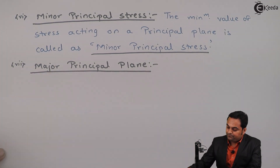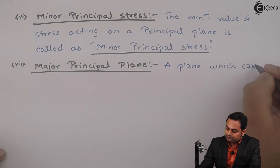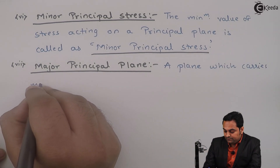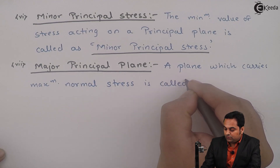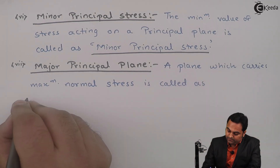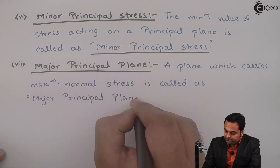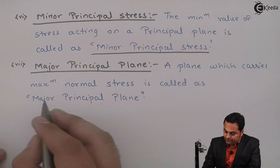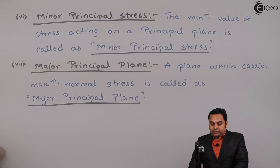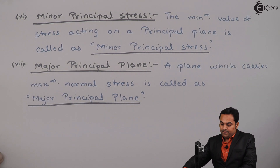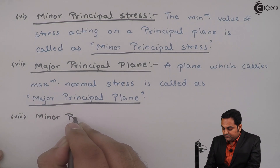Next, major principal plane. A plane which carries the maximum normal stress is called the major principal plane. So the plane which carries the maximum value of normal stress is called the major principal plane.